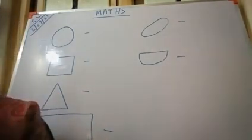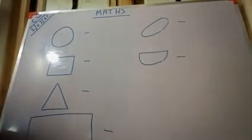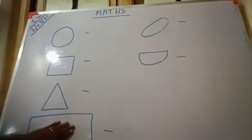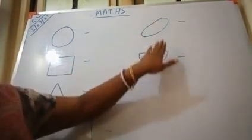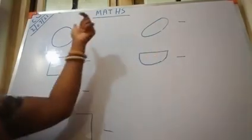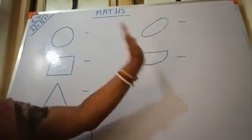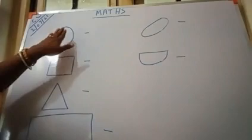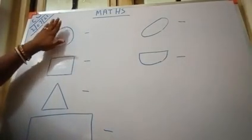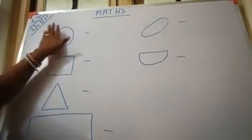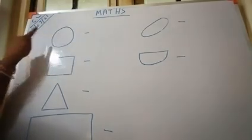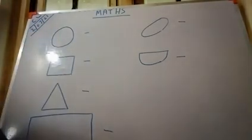You have already done the concept of shapes in lower nursery and you know the spellings. In upper nursery we will enlarge this topic. Circle is circular in shape. It has no sides and no corners — remember that. It is circular in shape and it has no sides and no corners.